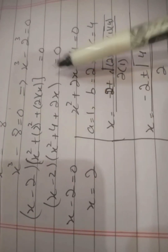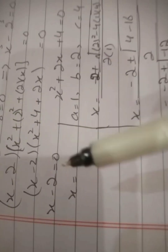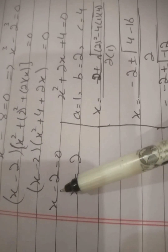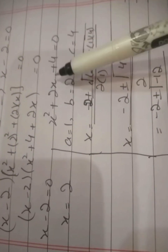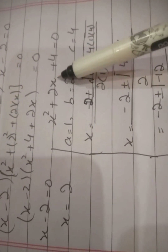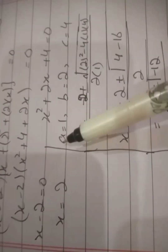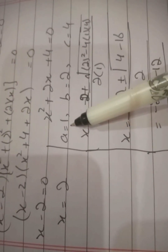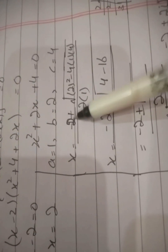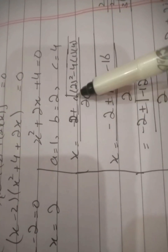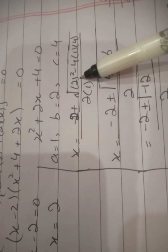We will put both factors equal to zero. First, x minus 2 equals zero, giving x equals 2. Then we put the second factor equal to zero: x squared plus 2x plus 4 equals zero. This is a quadratic equation, so we will solve it using the quadratic formula. Here a equals 1, b equals 2, and c equals 4. We put in the formula: x equals minus b plus or minus square root of b squared minus 4ac, all over 2a.